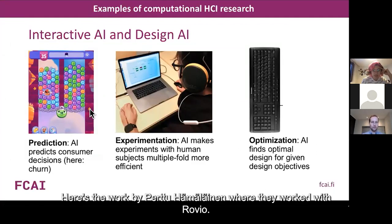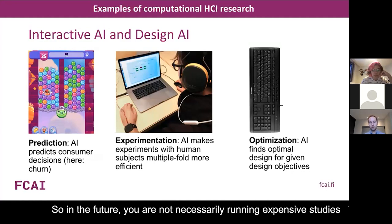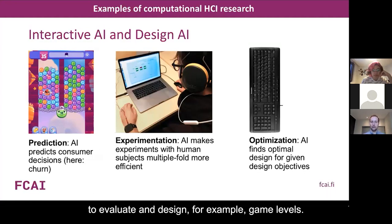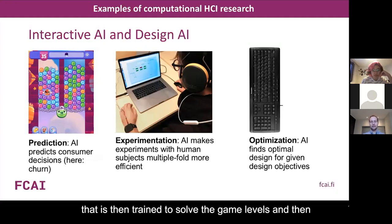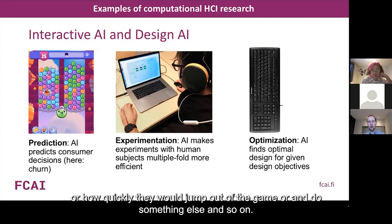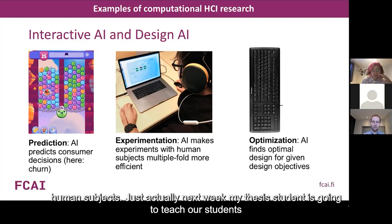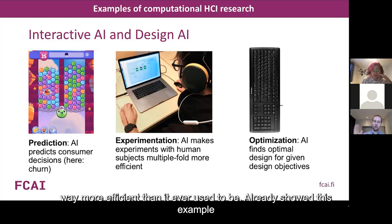Here's another example: work with Rovio doing automated game level testing. In the future, you're not necessarily running expensive empirical studies, but using AI models of gamers to evaluate and design game levels. An AI bot is trained to solve game levels, and you get indices of difficulty, player drop-off rates, and so on. We also work with AI to improve experimentation with human subjects. Next week, a thesis student is going to teach students how to do optimization-based experimentation that makes it far more efficient than before.